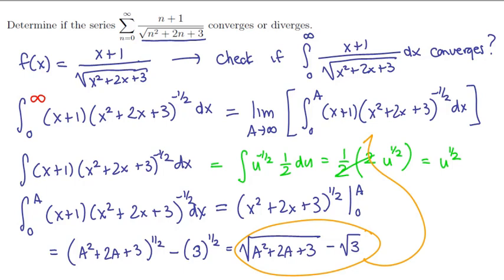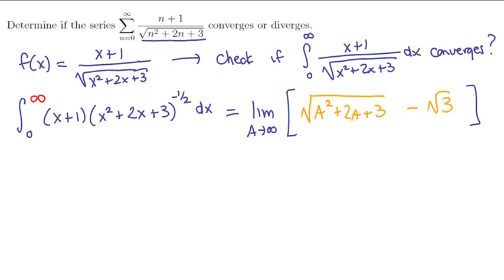We can now take the limit of this. As a tends to infinity, we have √(∞ + ∞ + 3) - √3. That's a ginormous value, take away a number, and so that means we have an infinite integral.